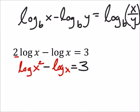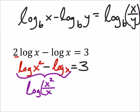are going to use the quotient rule. So these two, since this was a difference of logs with the same bases, we really have the common log of x squared over x, which is equal to three.